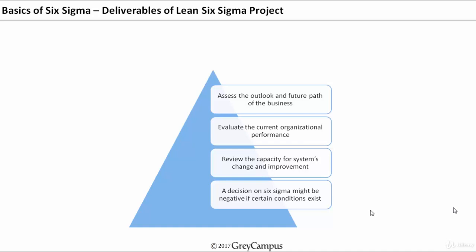The top management has to evaluate what is the current organization performance using the current processes and products. Then the management has to review the capacity for systems change and improvement.